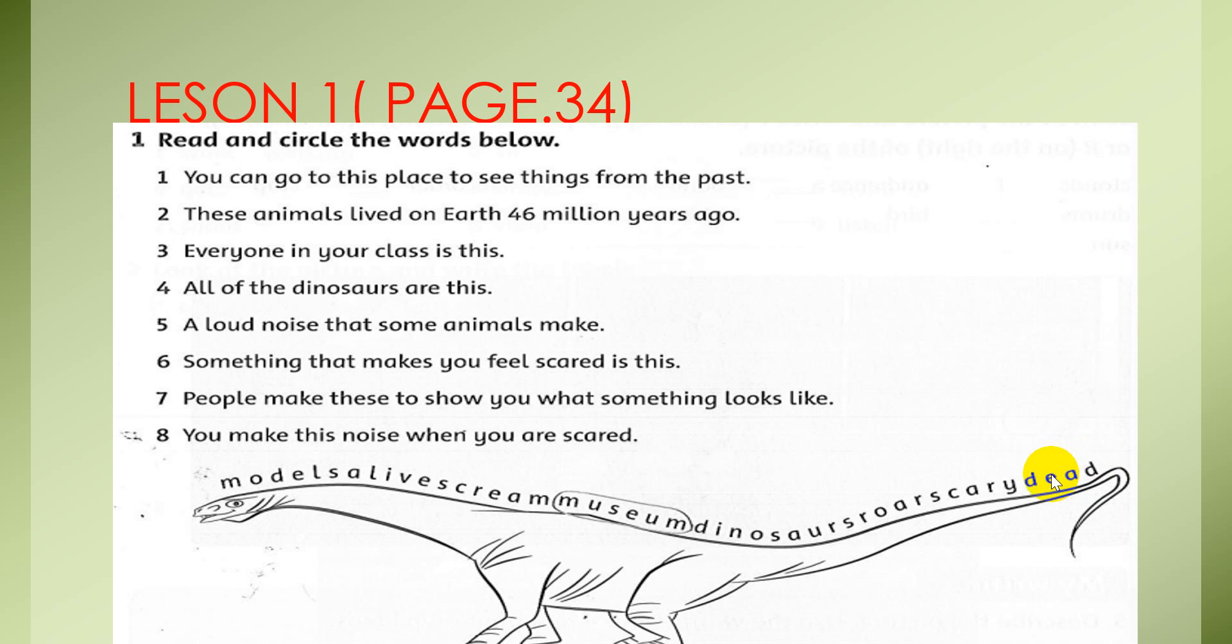Exercise 1. Read and circle the words below. For example, you can go to this place to see things from the past. You circle museum. And how about number 2, 3, 4, 5, 6, 7, 8? You look at and check together. Number 2, these animals lived on earth 46 million years ago. Dinosaur.